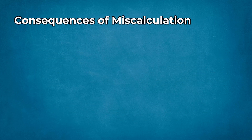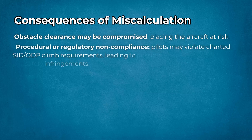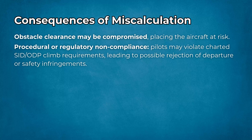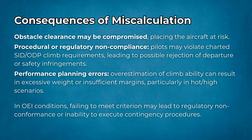Consequences of miscalculation: if a climb gradient is calculated incorrectly or the pilot fails to meet the published requirement, obstacle clearance may be compromised, placing the aircraft at risk. Procedural or regulatory noncompliance may occur — pilots may violate charted departure procedure climb requirements, leading to possible rejection of departure or safety infringements. Performance planning errors, such as overestimation of climbability, can result in excessive weight or insufficient margins, particularly in hot temperature and high elevation scenarios. In OEI conditions, failing to meet criteria may lead to regulatory nonconformance or inability to execute contingency procedures.